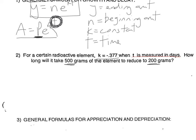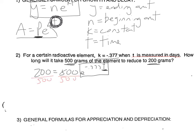Let's use our Ne^(KT) formula. Our ending amount is 200, our starting amount is 500, E is just a number we've talked about, we know K is negative 0.377, and we don't know T — that's the thing we're trying to find. Now we have to solve this equation. We're solving an equation that has a variable for an exponent. First and foremost, we have to isolate the exponential part — isolate E to the negative 0.377T — which means first, divide both sides by 500. So you have 0.4 equals E to the negative 0.377T.